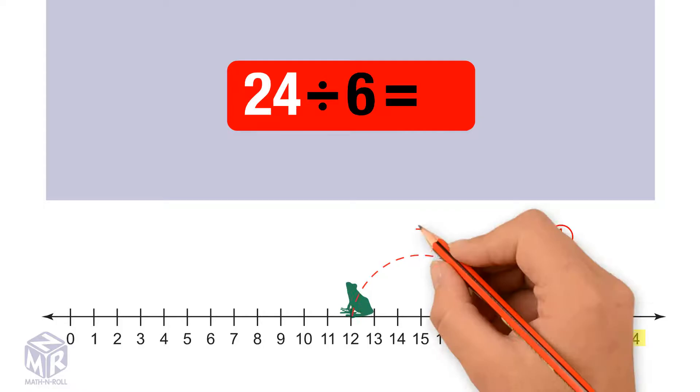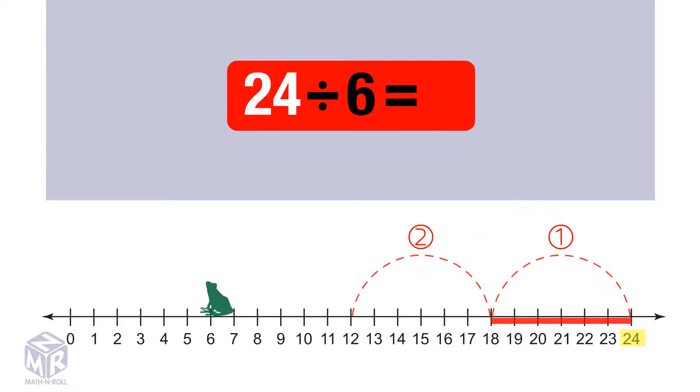1, 2, 3, 4. We jumped back 4 times, so 24 divided by 6 equals 4.